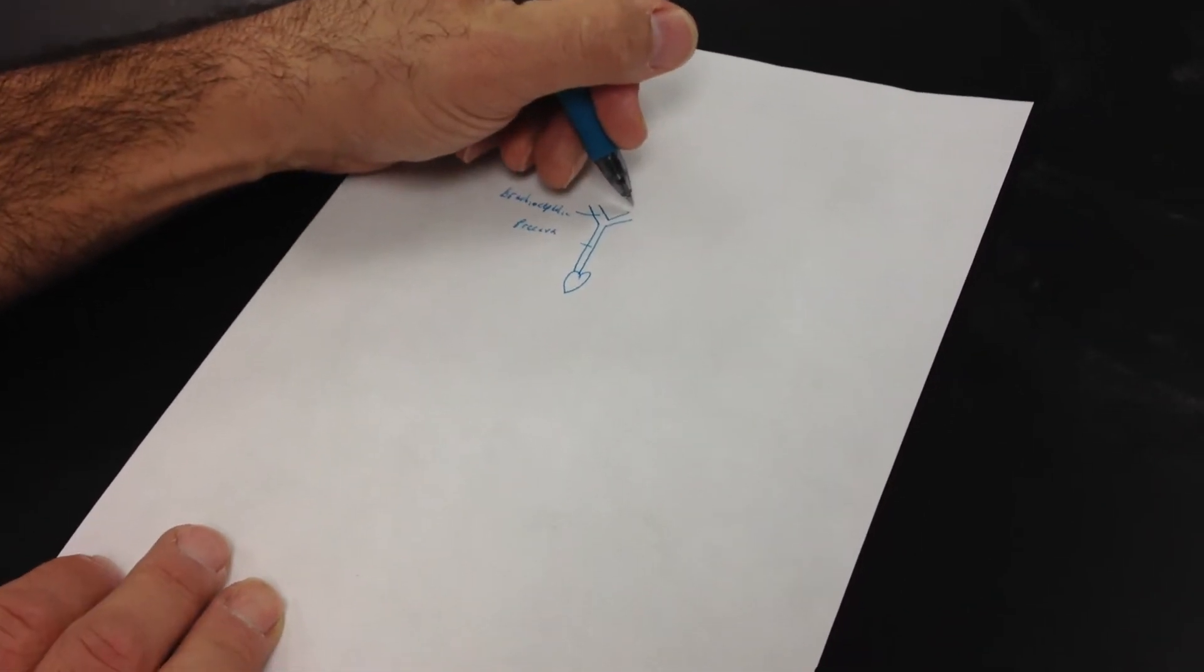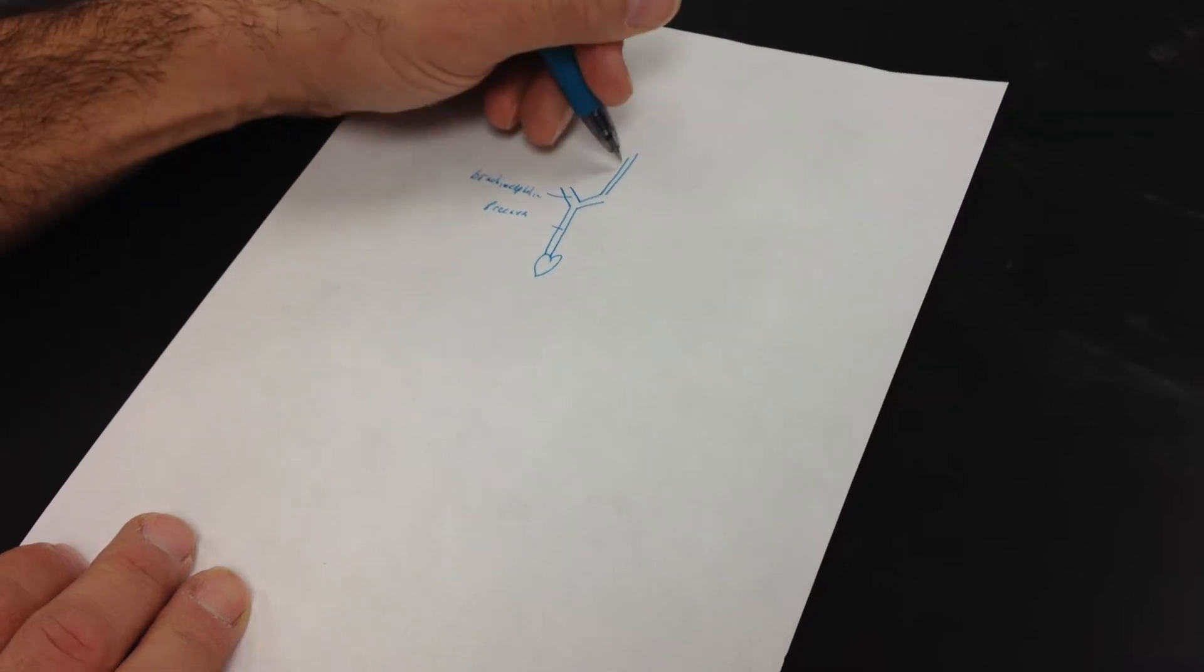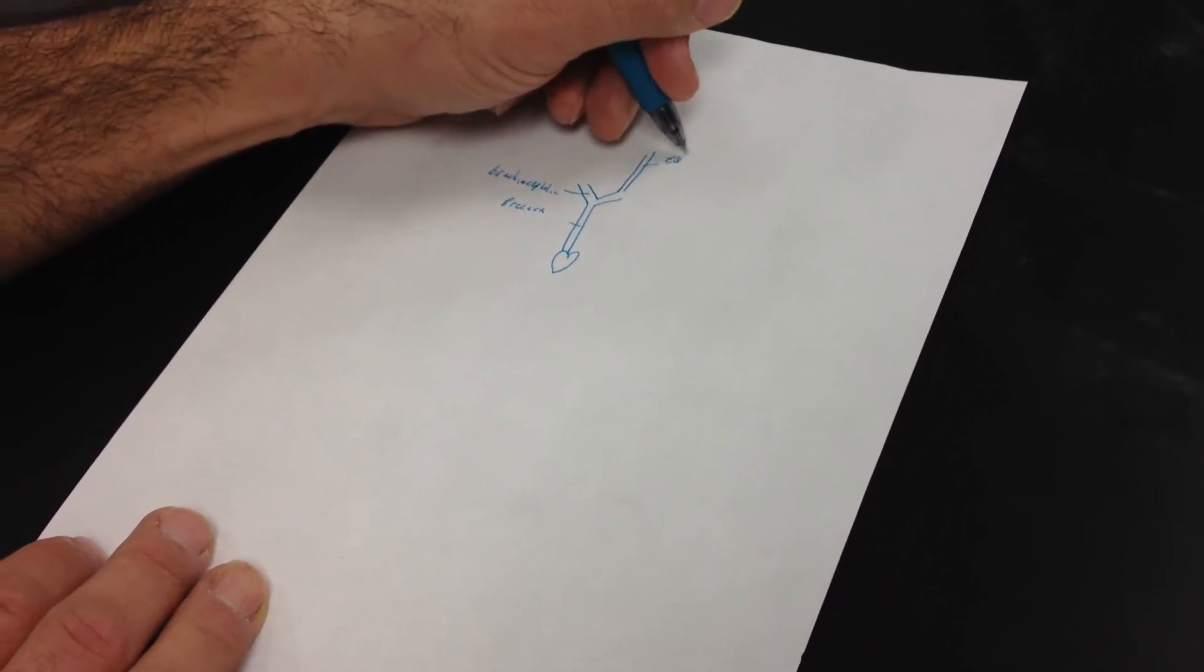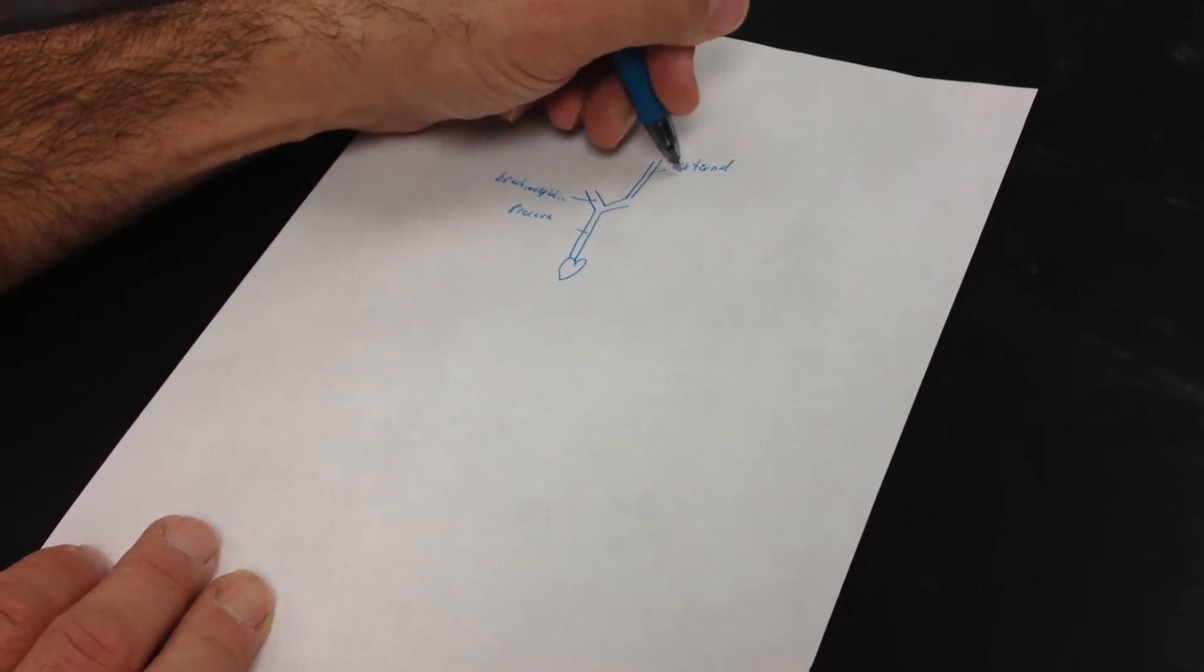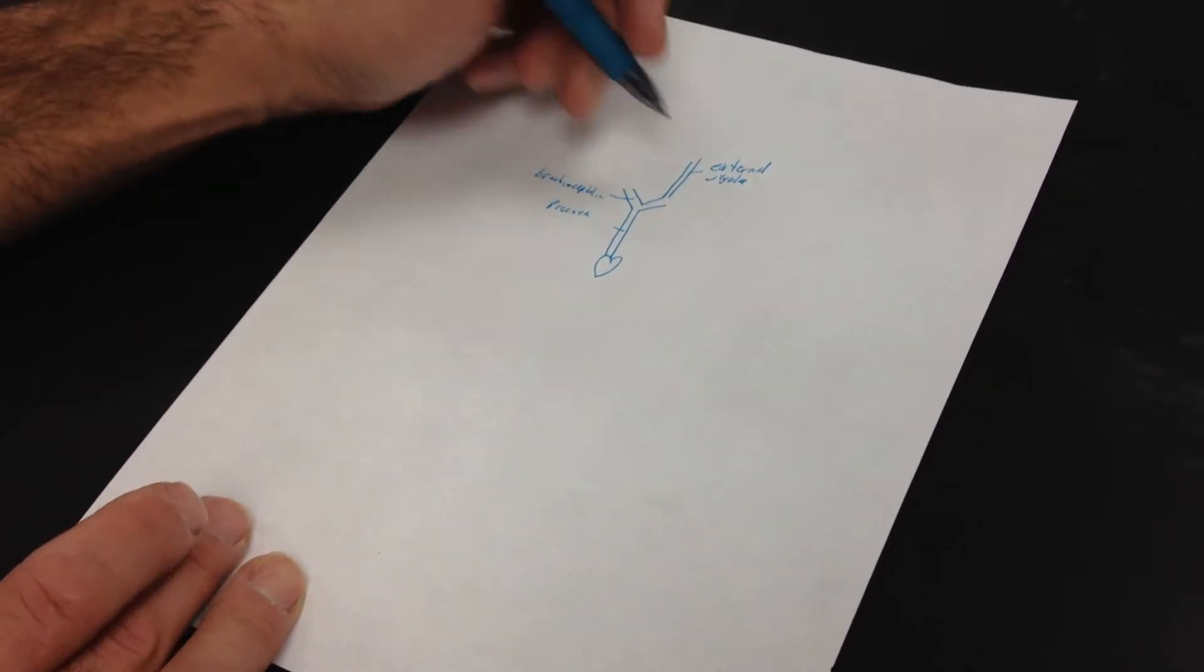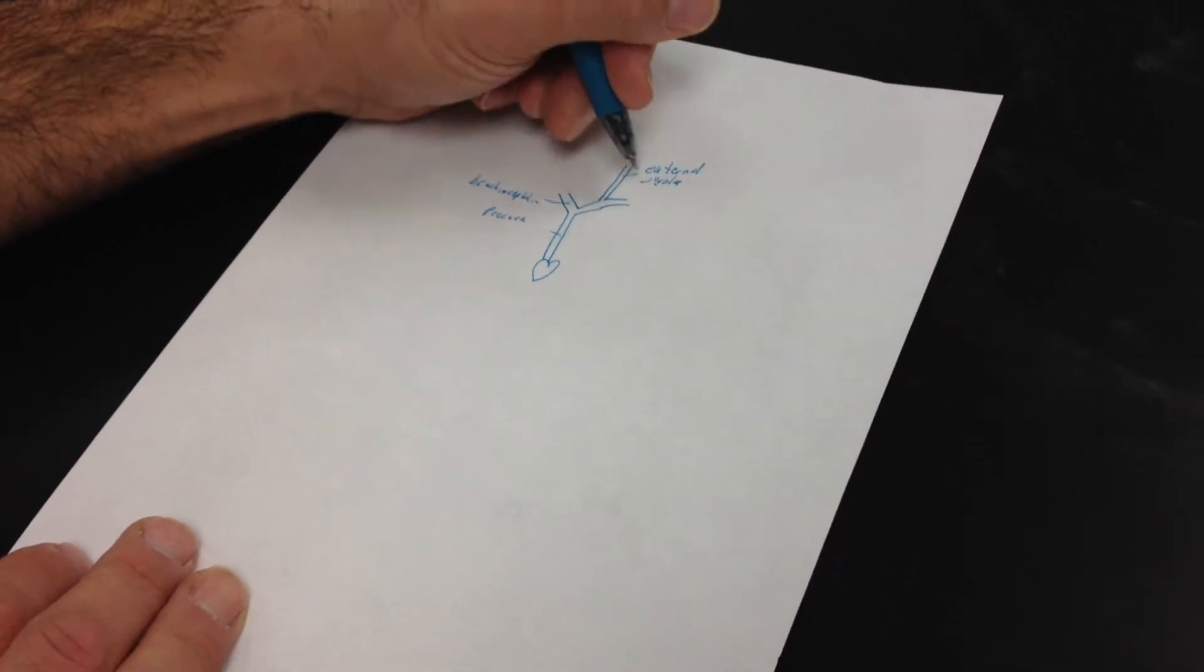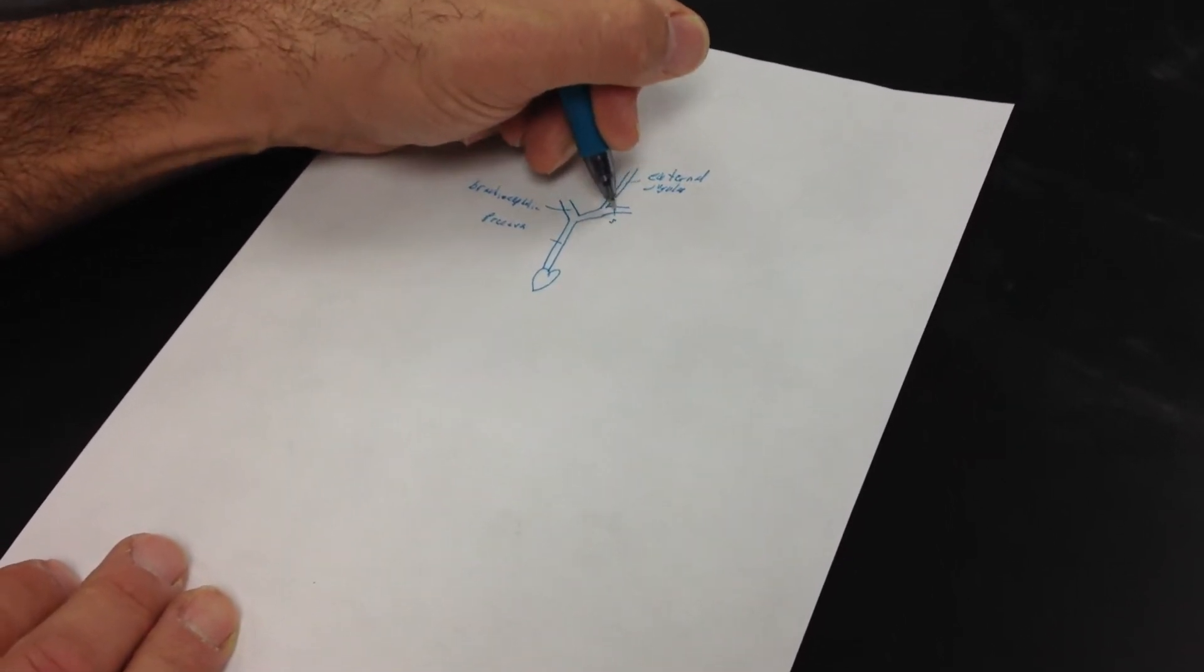The brachiocephalic veins are going to branch into the external jugular and the subclavian, this is subclavian vein.